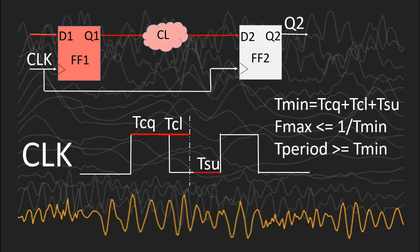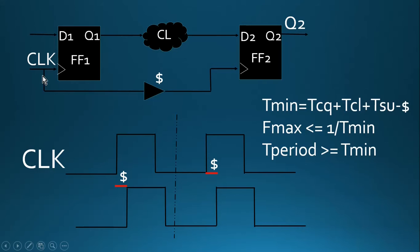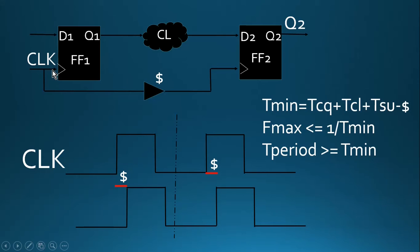Now let us see what will be the impact of skew on the maximum operating frequency of our design. I have considered positive skew in this case. When I say positive skew, the capturing-edge flop will get a delayed version of the clock — as is clear from the waveforms. So this is the clock applied to flip-flop 1 and this delayed version is received by flip-flop 2; this is called positive skew. In the case of negative skew, the delay would cause the throwing-edge flop to get a delayed version of the clock compared to the capturing-edge flop.